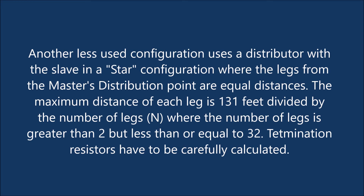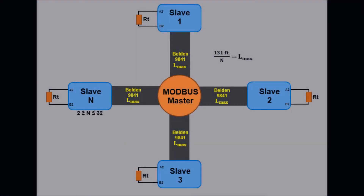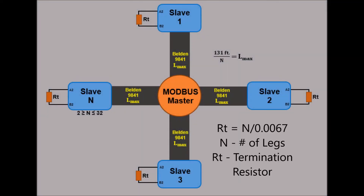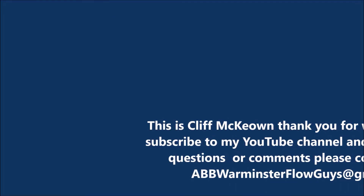Another less-used configuration uses a distributor with the slave in a star configuration, where the legs from the master's distribution point are equal distances. The maximum distance of each leg is 131 feet divided by the number of legs (n), where n is greater than 2 but less than or equal to 32. Termination resistors have to be carefully calculated: RT equals n divided by 0.0067, where n is the number of legs and RT is the value of the termination resistor.